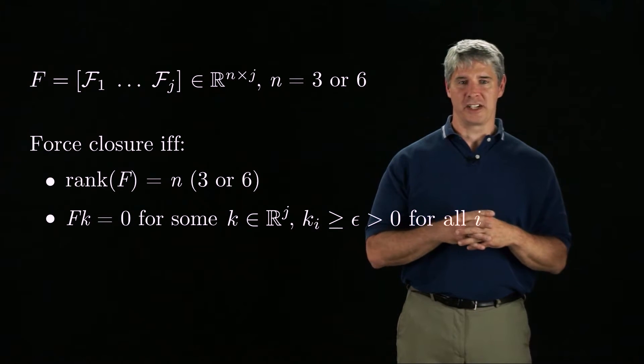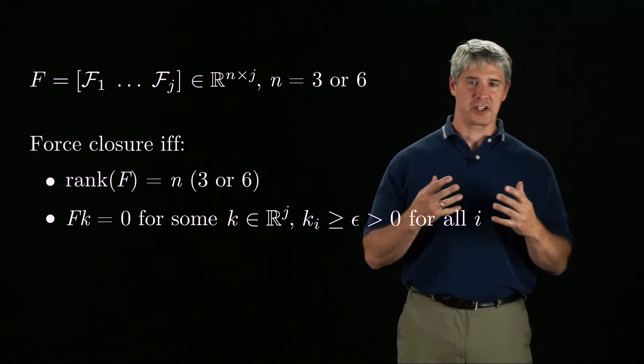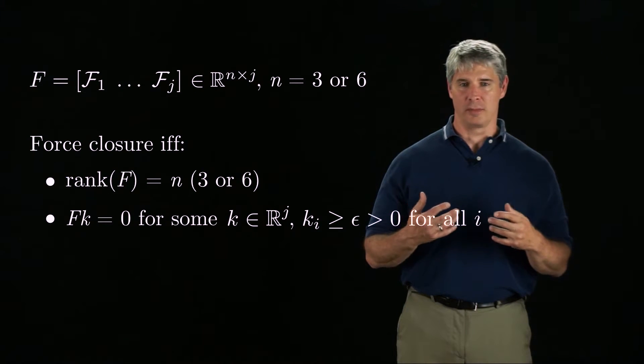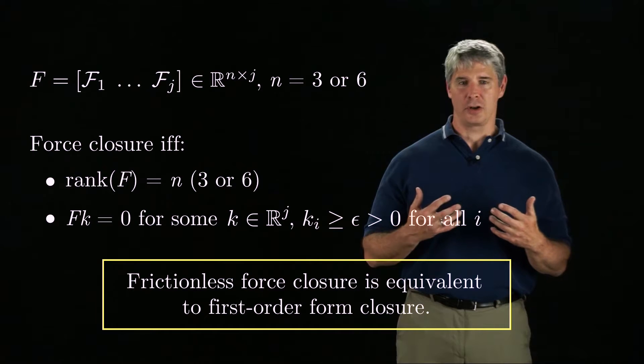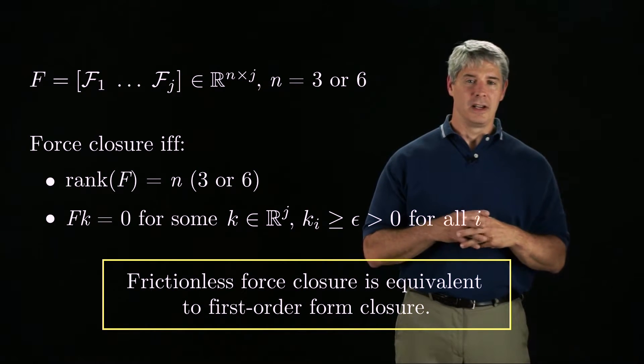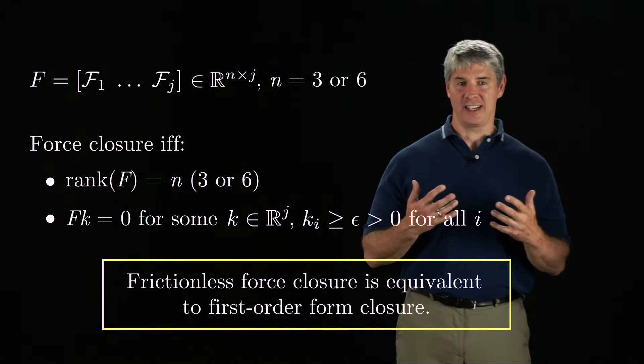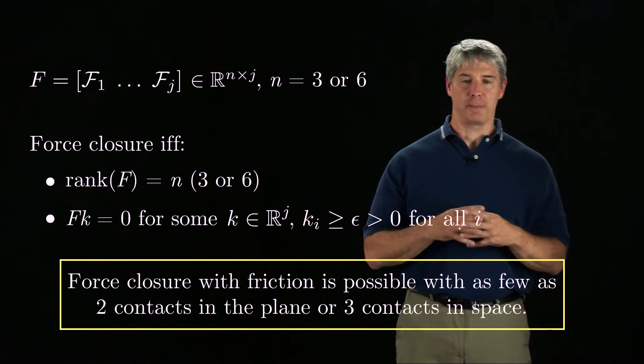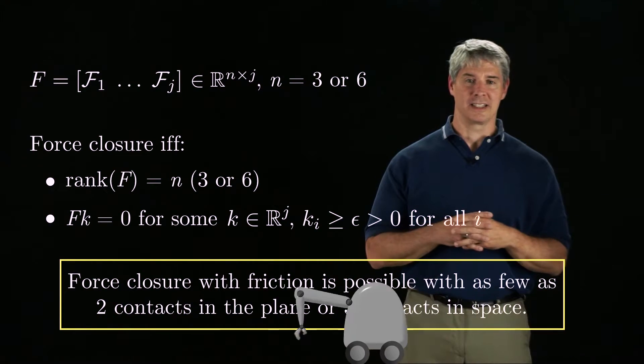If the friction coefficient at each contact is zero, then the friction cone is just along the contact normal, and frictionless force closure is therefore equivalent to first-order form closure. If there is non-zero friction at the contacts, however, force closure is possible with as few as two contacts in the plane, or three contacts in space.